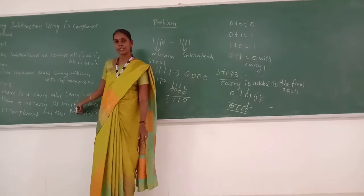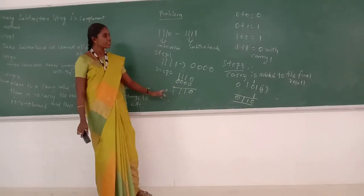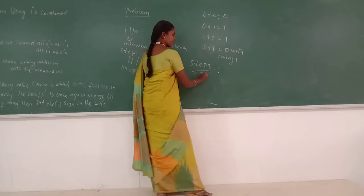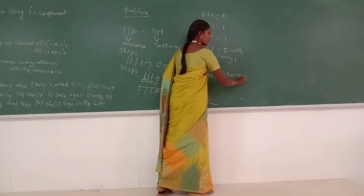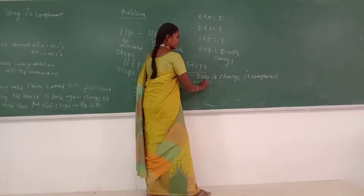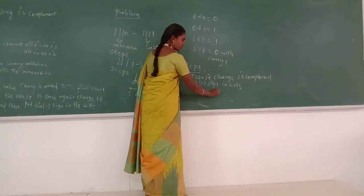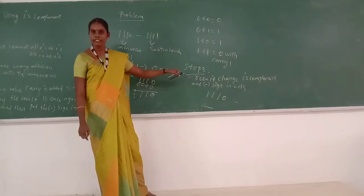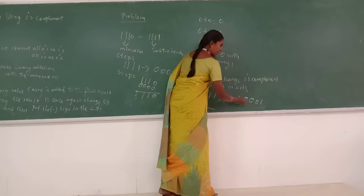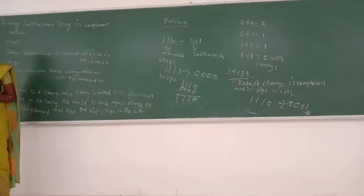Since there is no carry value in step 3, the result is once again changed to one's complement method. Then we put the minus sign on the left-hand side. The final result is 1 1 1 0. Convert using one's complement — all ones as zeros and all zeros as ones — giving 0 0 0 1. Then put the minus sign on the left-hand side. This shows how to apply one's complement method when there is no carry value.